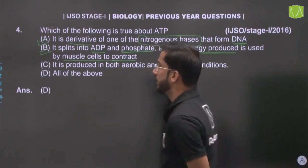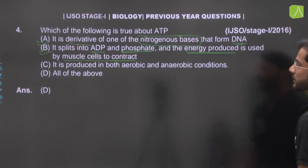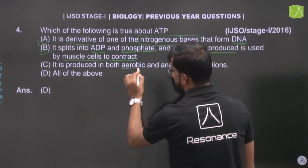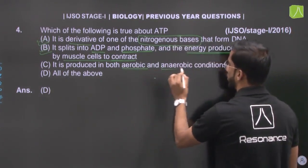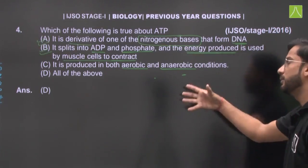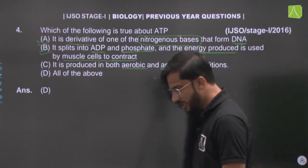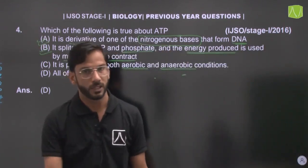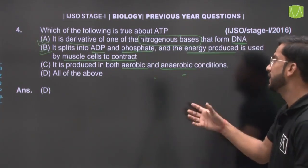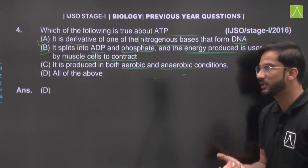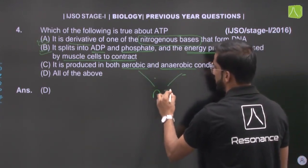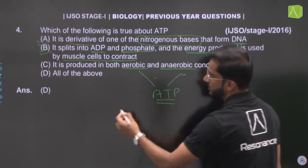Third: ATP is produced in both aerobic and anaerobic conditions. In aerobic respiration, 38 ATP molecules are released, while in anaerobic respiration the amount is considerably less — only 2 ATP — but in both conditions ATP is being released. Option C is also correct.